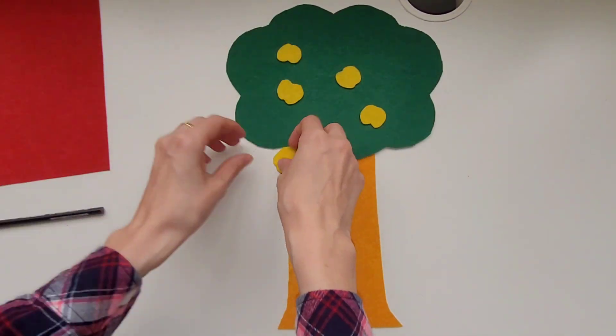Next I'm going to use some yellow felt. I'm going to trace and cut out some little apples.